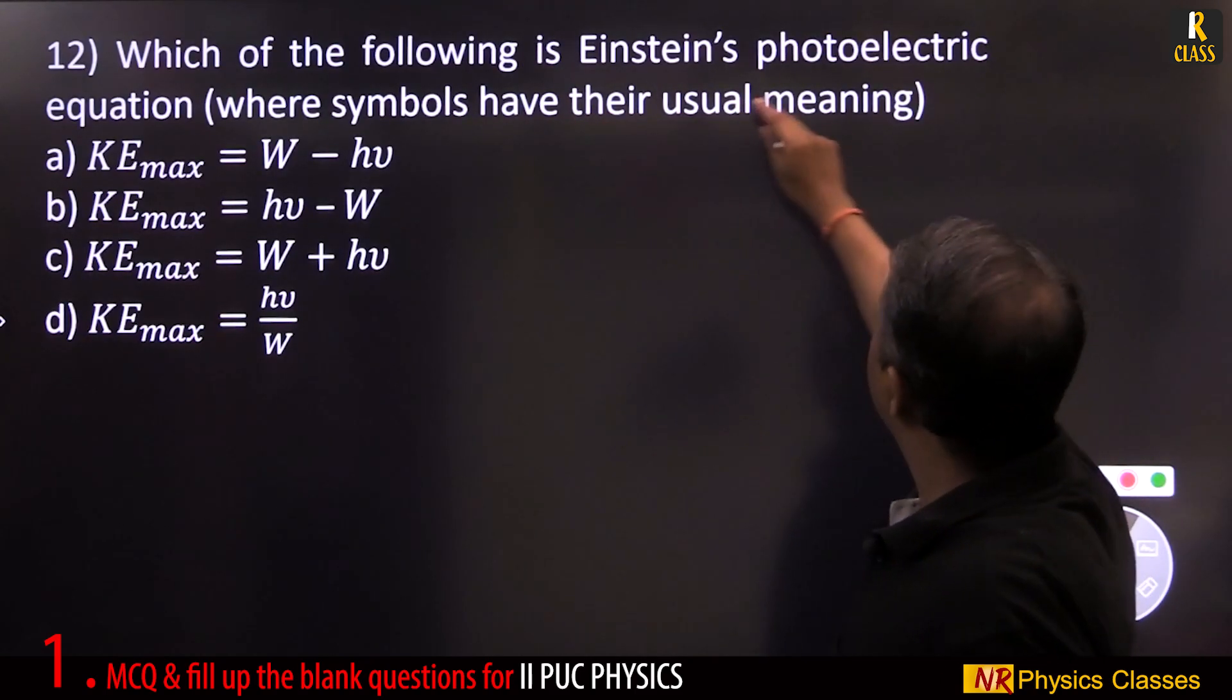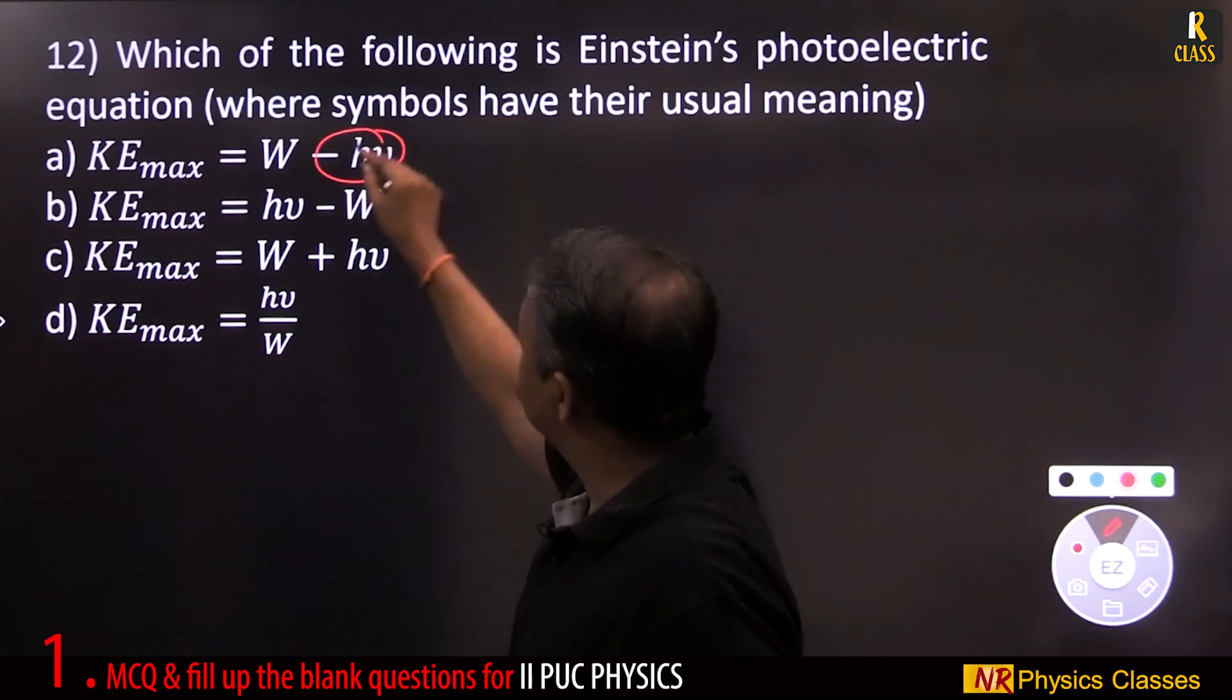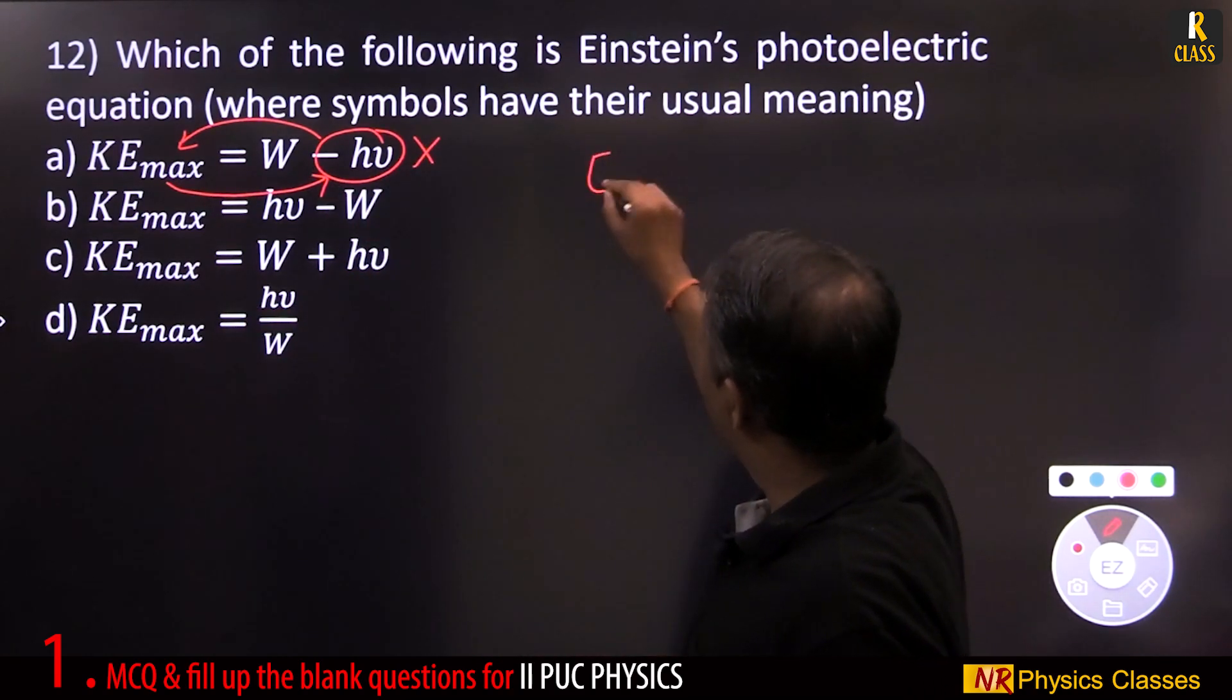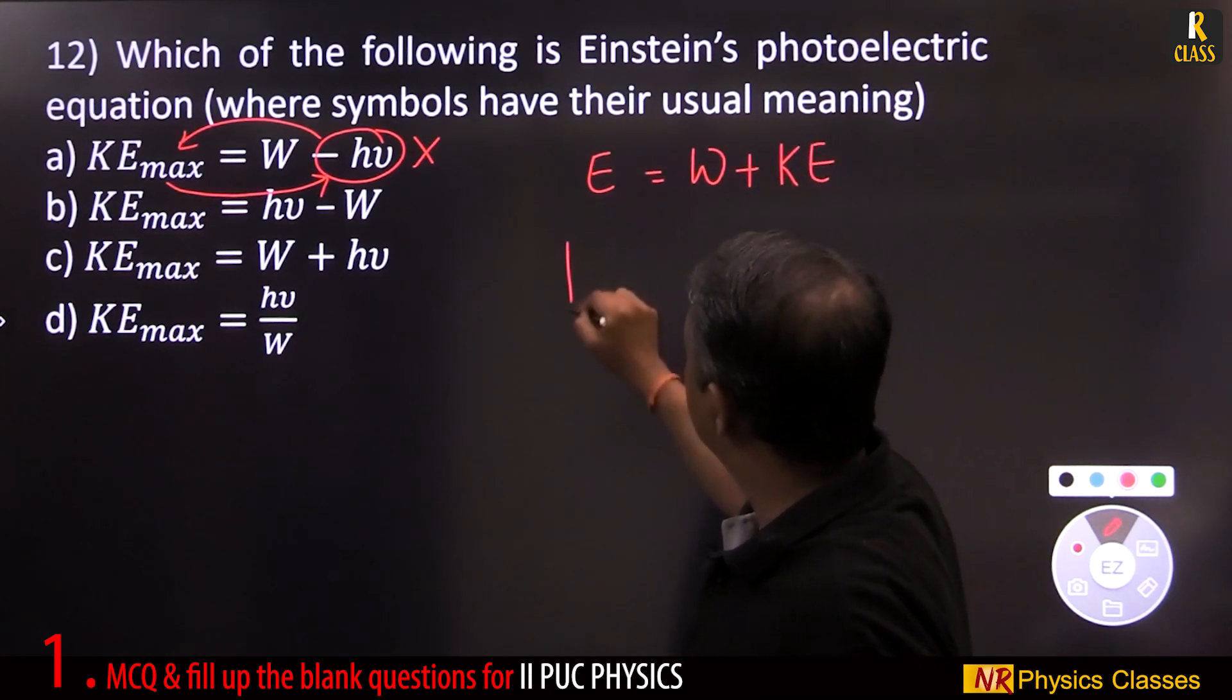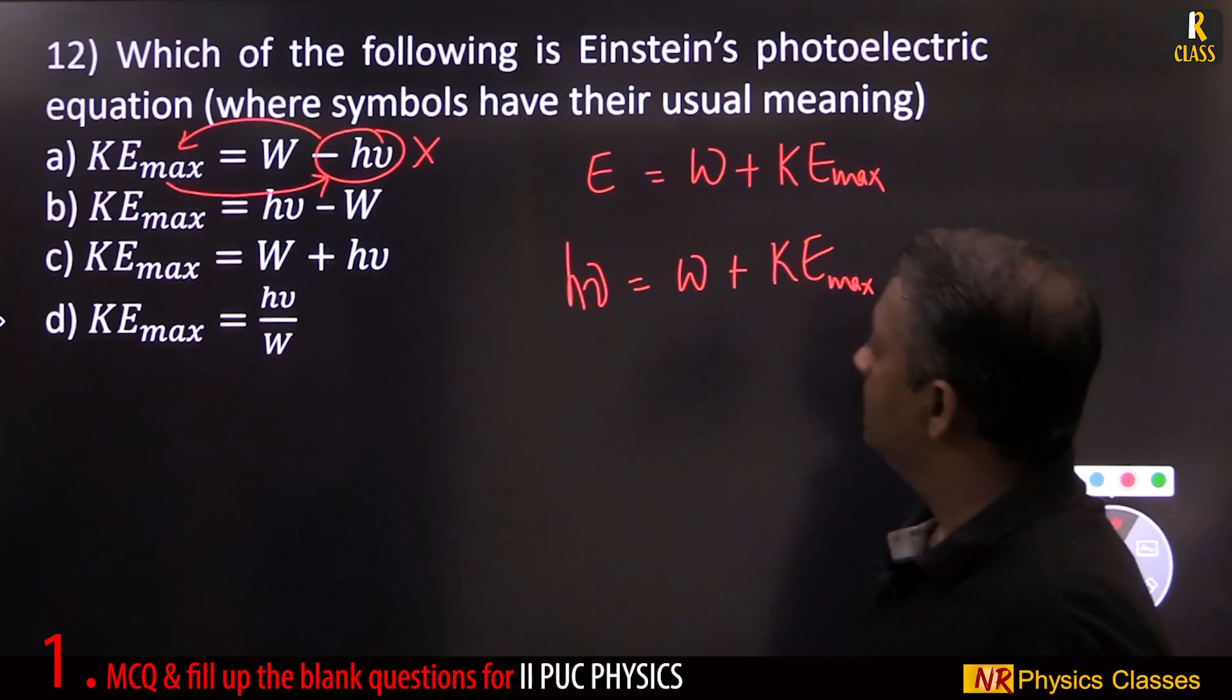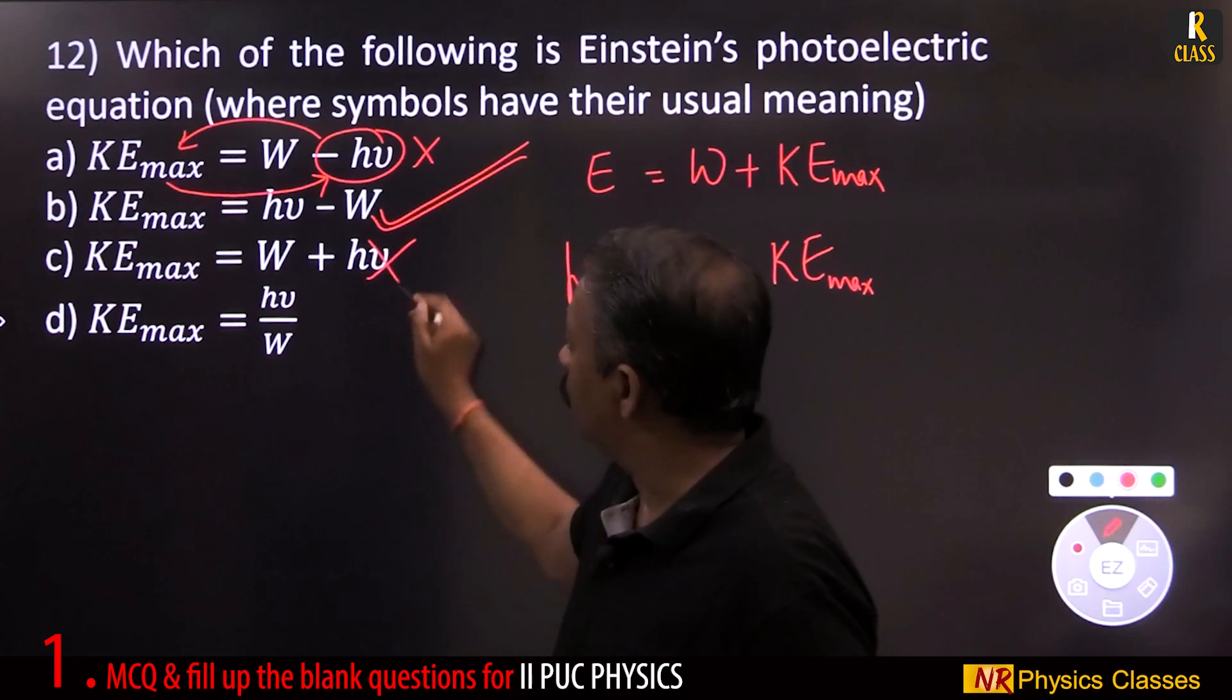Which of the following is Einstein's photoelectric effect equation? Rearrange. This is energy of incidence. If this goes to the other side, kinetic energy - no. Recall the expression: energy equal to work function plus kinetic energy. This is h nu. This is h nu, work function plus kinetic energy. Of course, maximum kinetic energy. This gives kinetic energy.